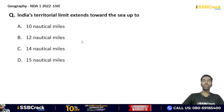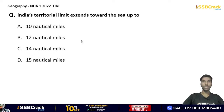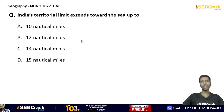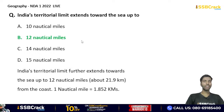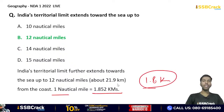India's territorial limit extends toward the sea up to: 10 nautical miles, 12 nautical miles, or 14 nautical miles? Internationally, all countries have defined sea extensions — the maritime boundary. The correct answer is option B — 12 nautical miles. One nautical mile equals 1.852 km, approximately 1.8 km, so 12 nautical miles is approximately 22 km — that is India's sea extension.